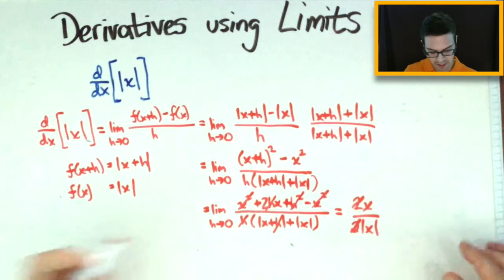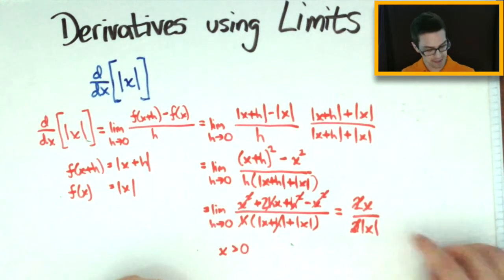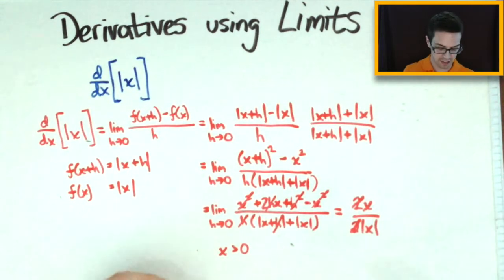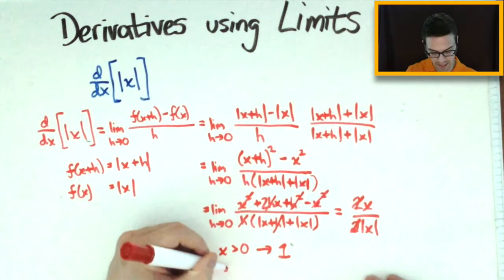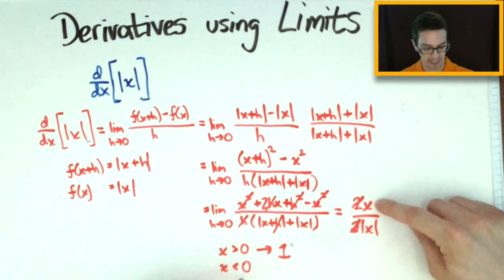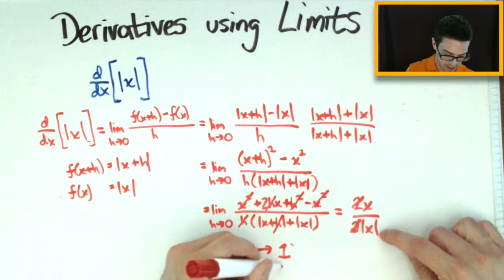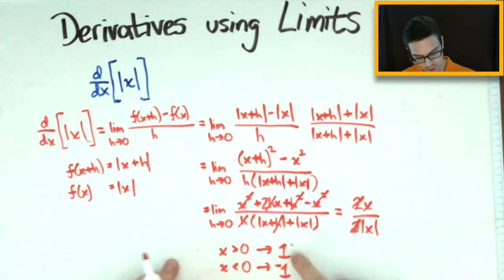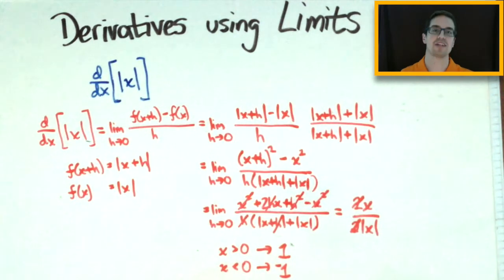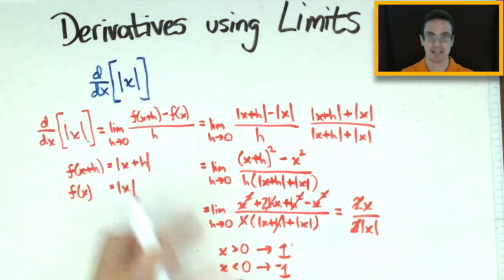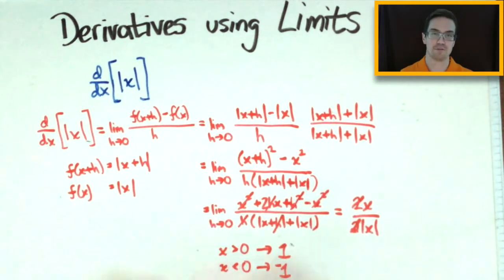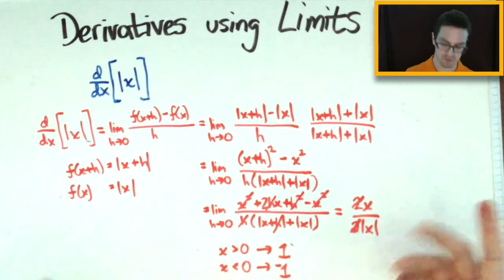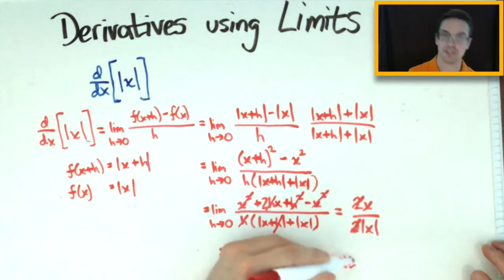Now an interesting thing happens with this result. If x is greater than zero, both x and the absolute value of x are positive and equal, so they cancel and the derivative equals 1. But if x is less than zero, you have a negative value on top and a positive on the bottom, giving negative 1. Since the two sides don't agree — 1 on one side and negative 1 on the other — the limit doesn't converge, so the derivative does not exist. The function is non-differentiable at x equals zero.